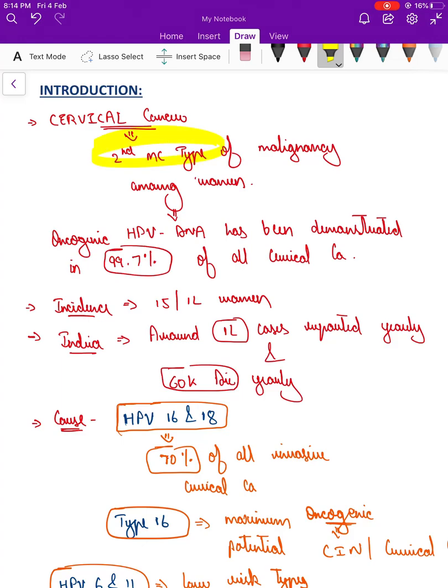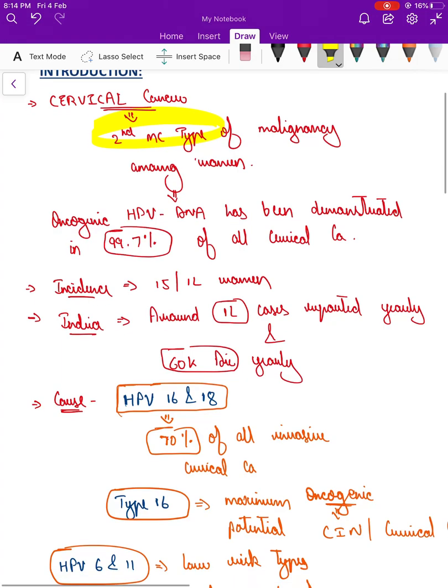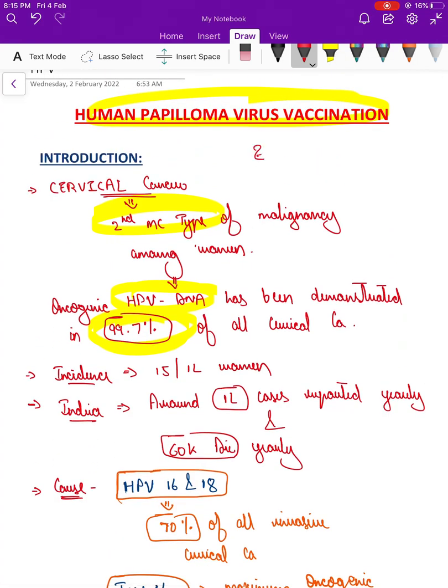As we already spoke about, cervical cancer is second most common type of malignancy among women. HPV DNA has been extracted from around 99.7 percent of all cervical carcinoma, so most of the time HPV is the causative virus responsible for cervical carcinoma. Once there is exposure, after 10 to 15 years carcinoma can develop.